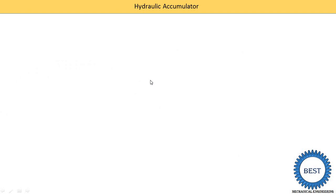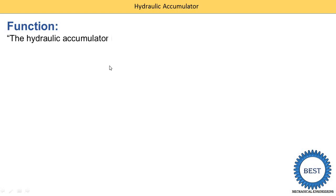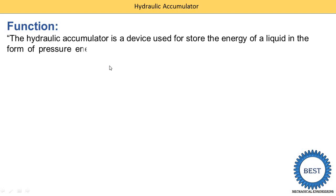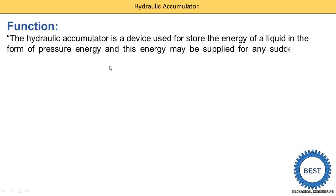First, we start with the function. A hydraulic accumulator is used to store energy. Energy exists in three forms: pressure energy, kinetic energy, and potential energy. A hydraulic accumulator is used to store the energy of a liquid in the form of pressure energy. This stored energy may be supplied for any shutdowns or intermediate requirements.